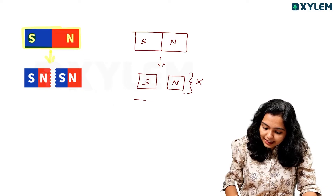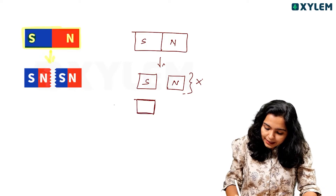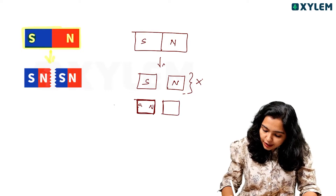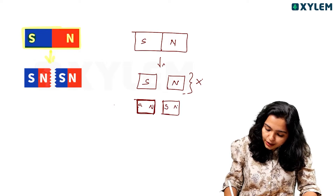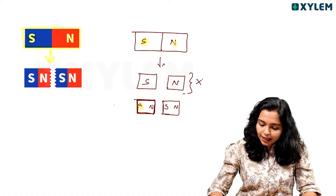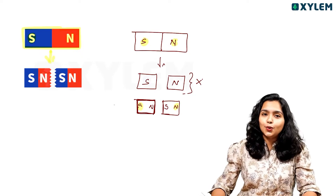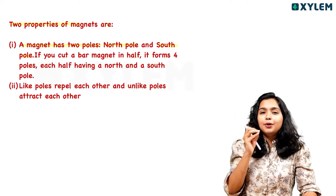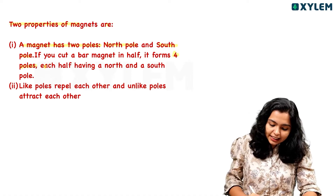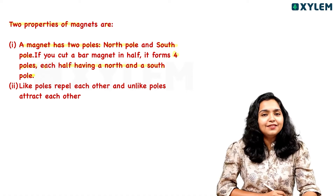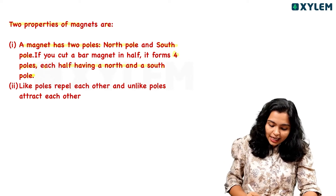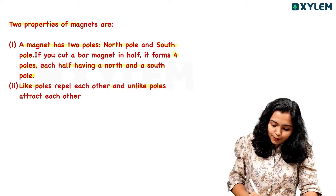If you cut a magnet, you get two pieces. Each piece will have a South Pole and a North Pole. So when you cut a magnet, you have four poles — each half having its own north and south pole. North pole and south pole attract each other. Like poles repel each other, and unlike poles attract each other.